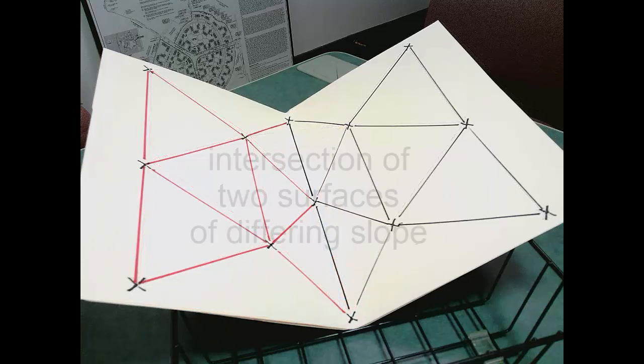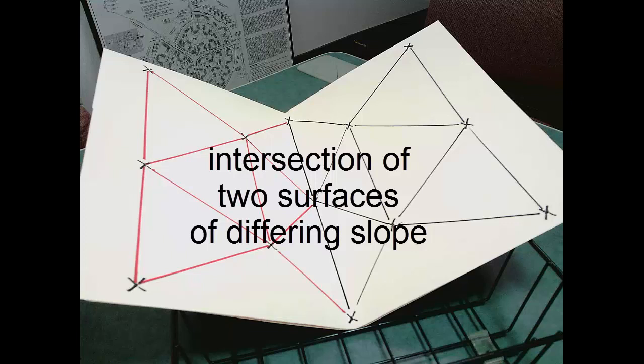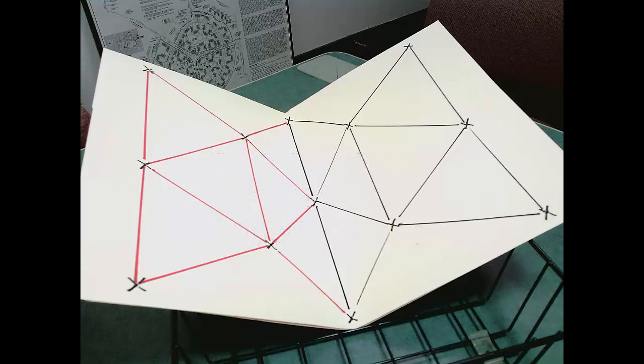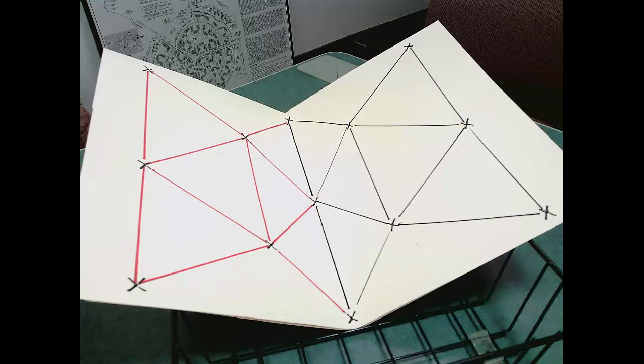A break line is the intersection of two surfaces of differing slope, just as we have at our stream. Therefore, the triangle sides in our triangulated irregular network must not cross a break line.